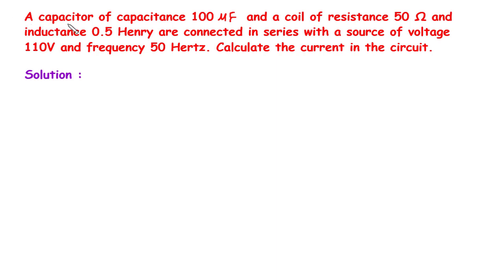A capacitor of capacitance 100μF and a coil of resistance 50 ohm and inductance 0.5 henry are connected in series with a source of voltage 110V and frequency 50Hz. Calculate the current in the circuit.